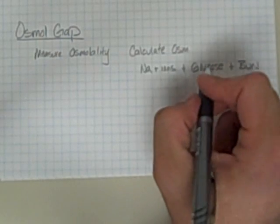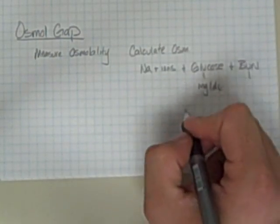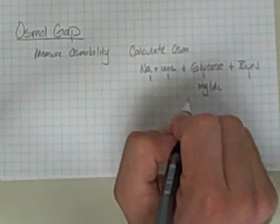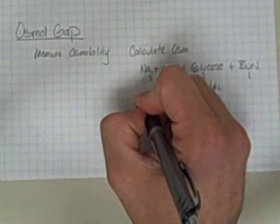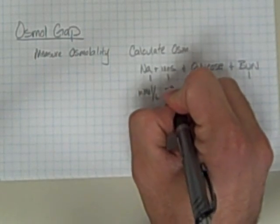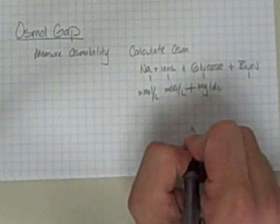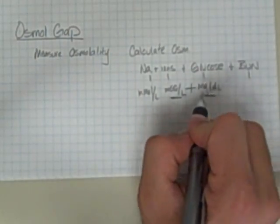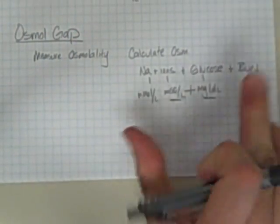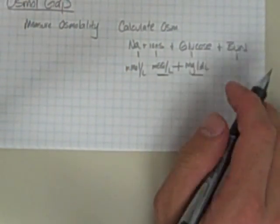However, glucose comes as milligrams per deciliter, as does BUN. But sodium and the other ions that we measure in the blood, we typically see as millimoles per liter, or maybe even milliequivalents per liter. And I can't add these two together because they're not in similar units. So we can use a couple of factors to clean this up a bit. And it's really pretty simple.